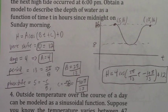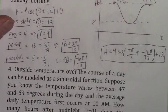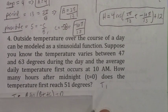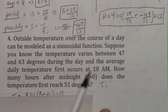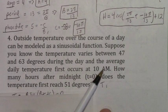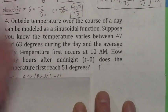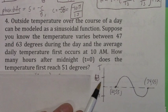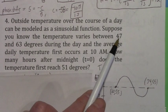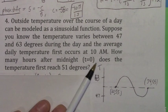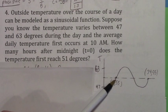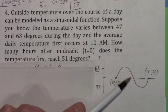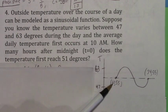The outside temperature varies sinusoidally from 47 to 63 degrees, and the average temperature first occurs at 10 a.m. The key is to sketch the situation. The average temperature is 55 — the midpoint between 47 and 63. Since we're given the middle of the curve and not the extreme point, a sine function is more natural here, though you could find the extreme points and use cosine if you wanted.